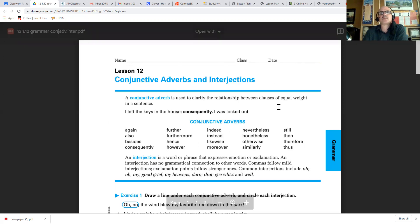Conjunctive adverbs are used to clarify the relationship between clauses of equal weight in a sentence that you would separate with a semicolon, which you don't want to use all the time, and a lot of people don't understand how to use those.